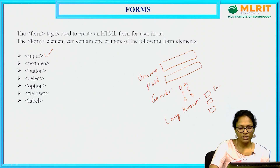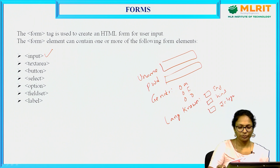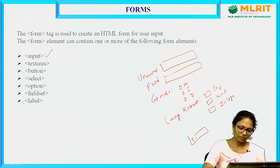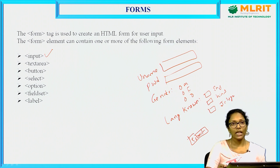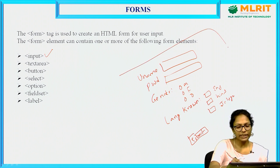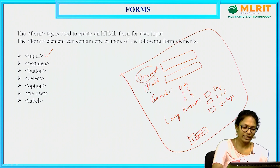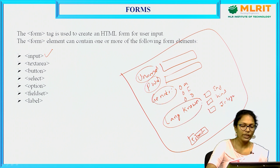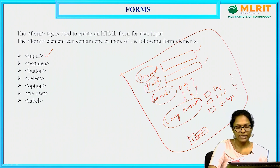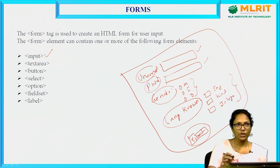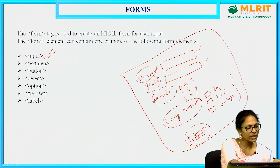For languages, we have checkboxes: English, Hindi, Telugu, and so on, followed by one submit button. So here we have many elements — this complete thing I can call it a form. There are labels, text fields, radio buttons, and a button. All these components you can create using the input tag.